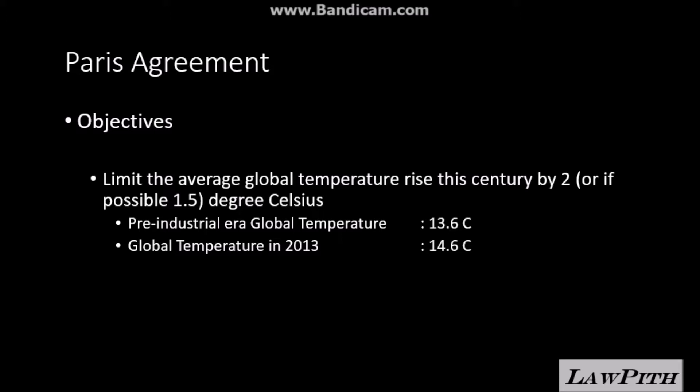Now, the Paris Agreement seeks to not let this temperature increase by more than 2 degrees in comparison to what it was during the pre-industrial era. So if it was 13.6 degrees in the 18th century, the Paris Agreement doesn't want this to increase by more than 2 degrees, which would be 15.6 degrees Celsius.